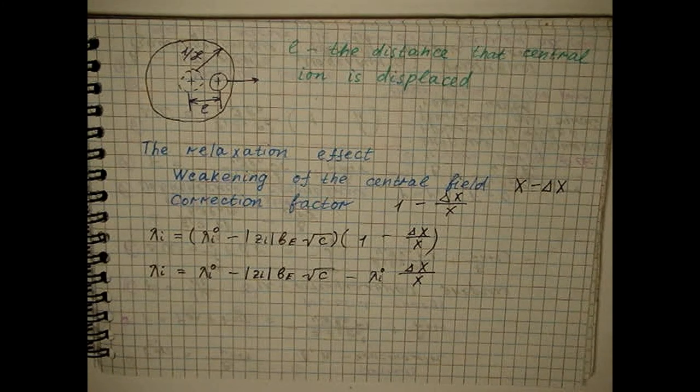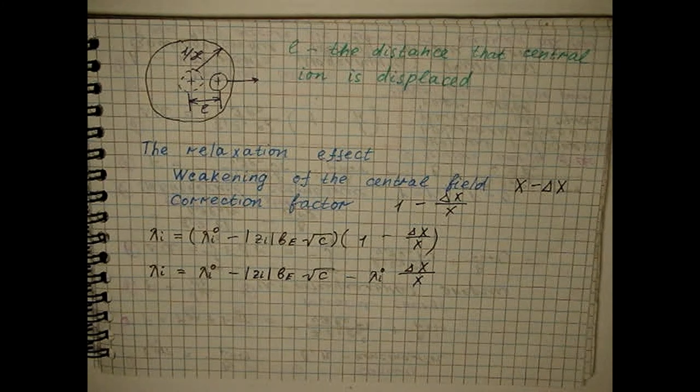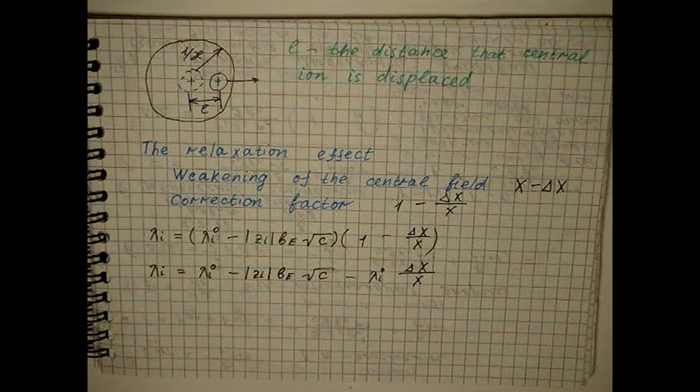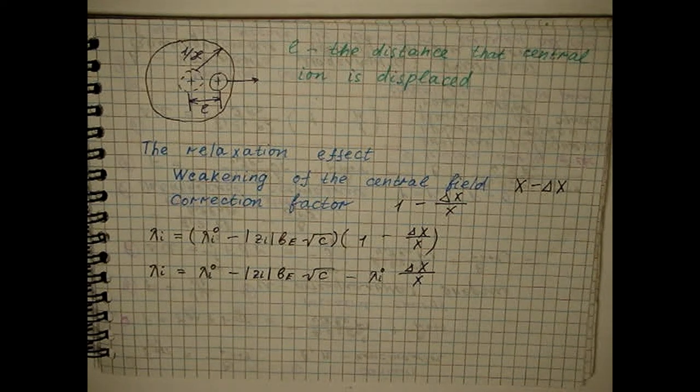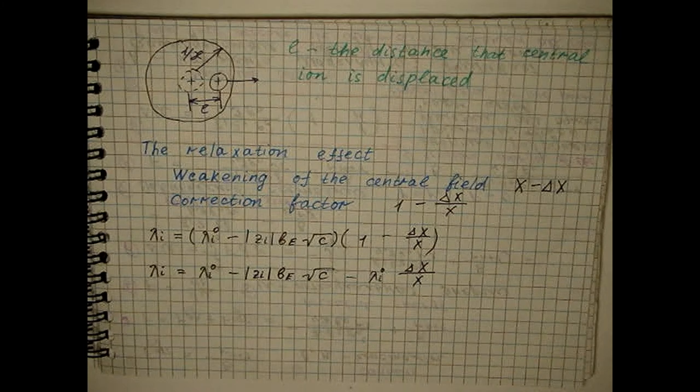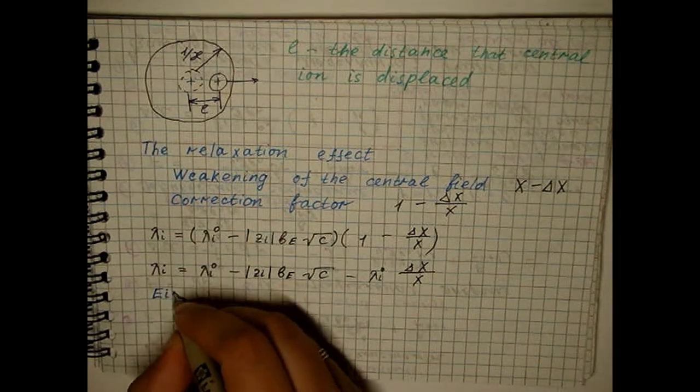Let's calculate the value of delta x divided by x up to a numerical coefficient, limiting ourselves to considering a monovalent electrolyte. Since the destruction of the ionic atmosphere occurs due to the diffusion process, to estimate the relaxation time we use the Einstein-Smoluchowski equation.